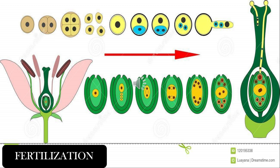The pollen tube grows down through the style and enters the ovary to reach the ovule. On reaching the ovule, the pollen tube releases the male gametes. The male gametes fuse with the female gamete, the egg in the ovule, to produce the zygote. The fusion of male and female gametes is called fertilization.